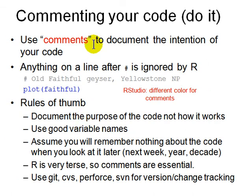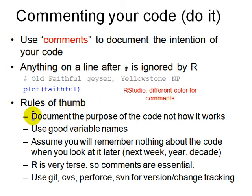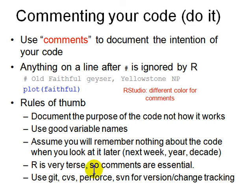Another important thing about R scripts is to put comments. Comments describe the intention of what you are doing in your code, not just what you are doing. Comments start with a hash symbol. Always document the purpose of the code. Use good variable names and function names, and assume that you won't remember anything, or that somebody else will be looking at your code. R is very terse — what would take a hundred lines in Python might take one line in R — so comments are essential.